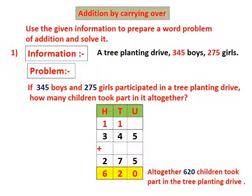So we will first draw the columns: 100s, 10s, and units. Then we write the numbers in it: 3 hundreds, 4 tens, 5 units plus 2 hundreds, 7 tens, 5 units.